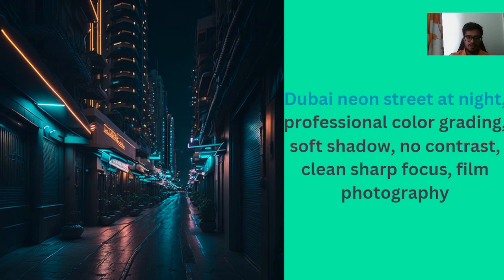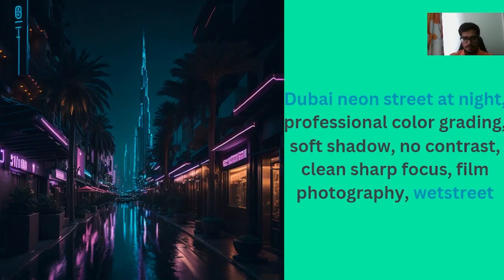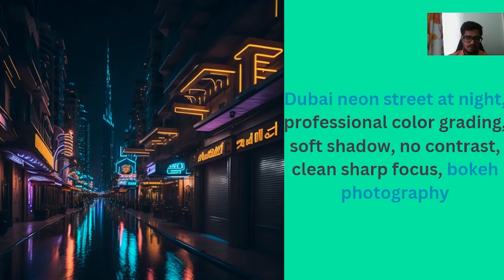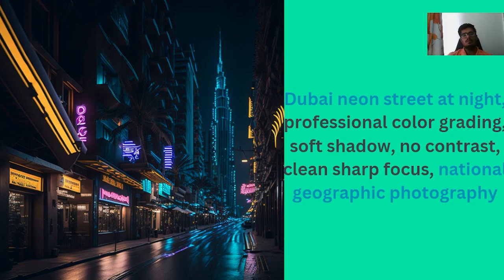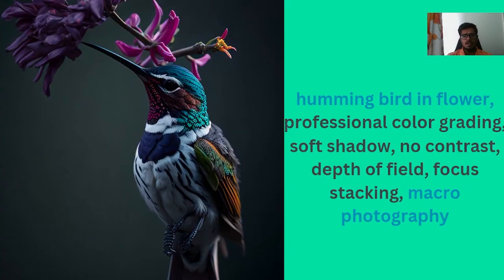Now let's look at a scene with multiple subjects and points of focus. The initial prompt is 'Dubai neon street at night, professional color grading, soft shadow, no contrast, clean sharp focus, film photography.' Adding 'wet street' to the prompt, you can see the Burj Khalifa in the background and the generation now features reflections on the street. Switching to bokeh photography increases the reflections and focus on specific subjects. Changing to National Geographic style shifts the focus to telling the story of the city — you can see trees, gold shops, and Burj Khalifa in the background.